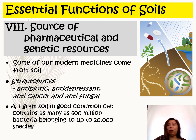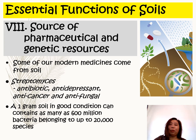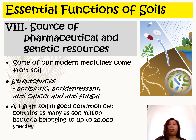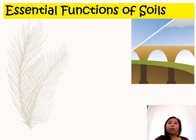The soil also harbors much of our Earth's genetic diversity. As mentioned earlier, one gram of soil in good condition can contain as many as 600 million bacteria belonging to up to 20,000 species — not to mention other microorganisms such as fungi, actinomycetes, protozoa, and others.